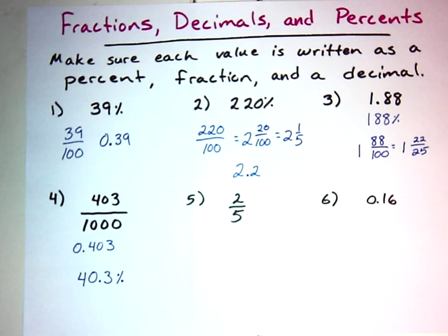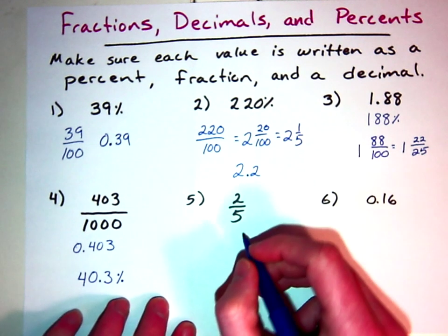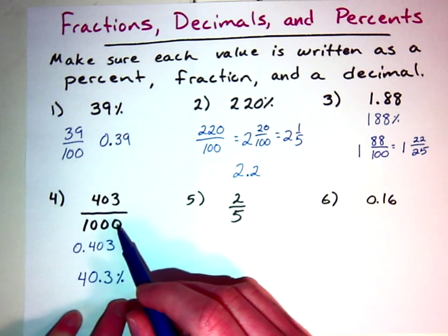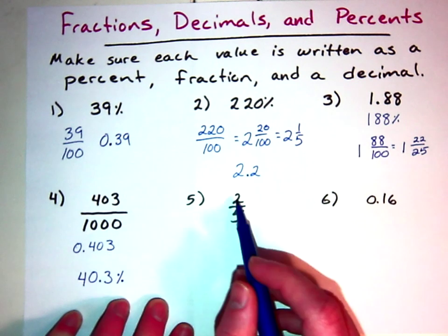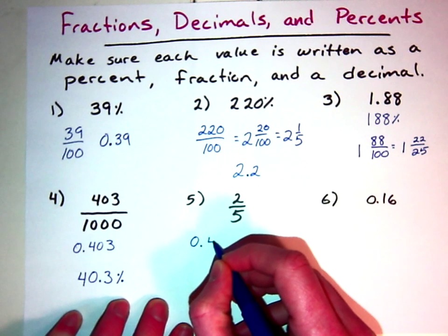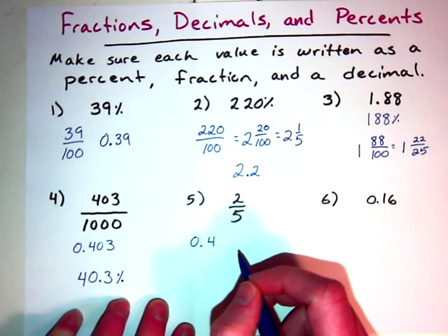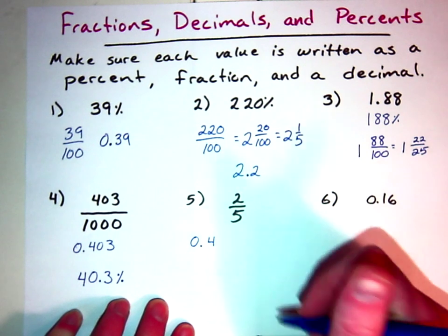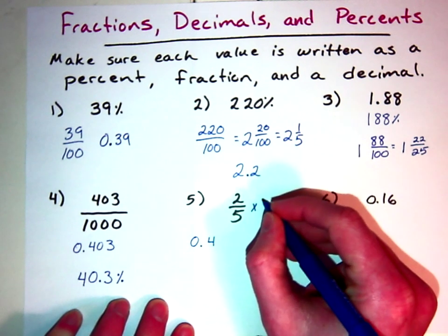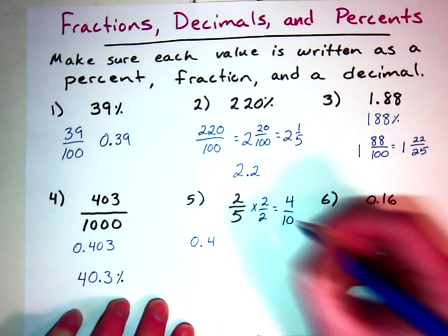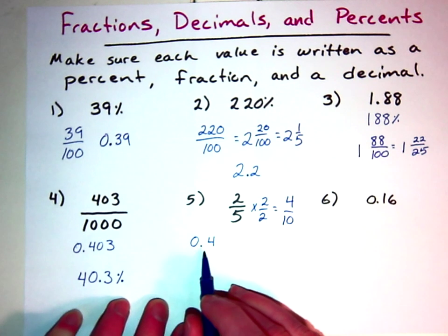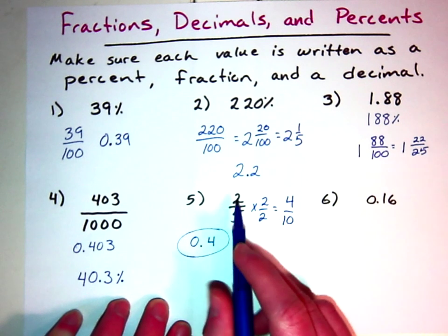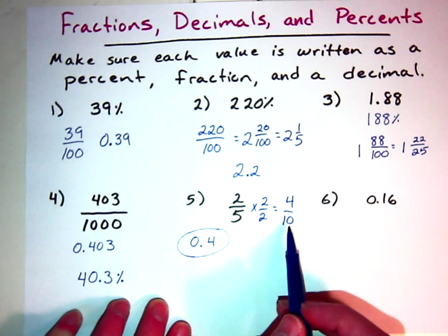For number five, I've got two-fifths. We're going to convert it to a percentage and a decimal. One way is a division problem: 2 divided by 5 gives 0.4. Another way is to multiply by 2 over 2 to get an equivalent fraction with a power of 10 denominator, giving us 4 tenths — exactly the same result. So there are a couple of ways we can find our decimal.